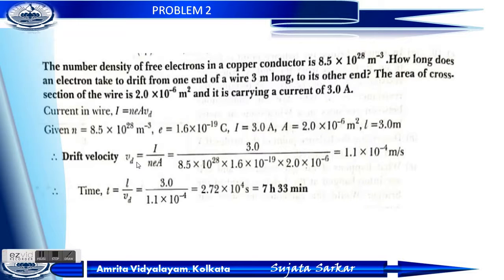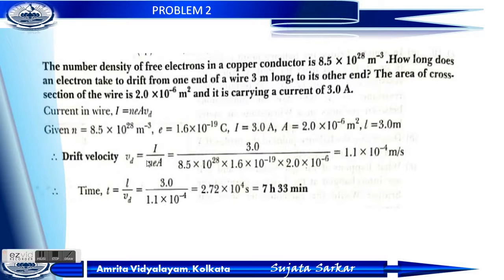Drift velocity V_D equals I by N E A. Substituting: I equals 3 ampere, N equals 8.5 into 10 to the power 28, E equals 1.6 into 10 to the power minus 19, and A equals 2.2 into 10 to the power minus 6. After calculating, we get V_D equals 1.1 into 10 to the power minus 4 meter per second. Now we have to find the time.